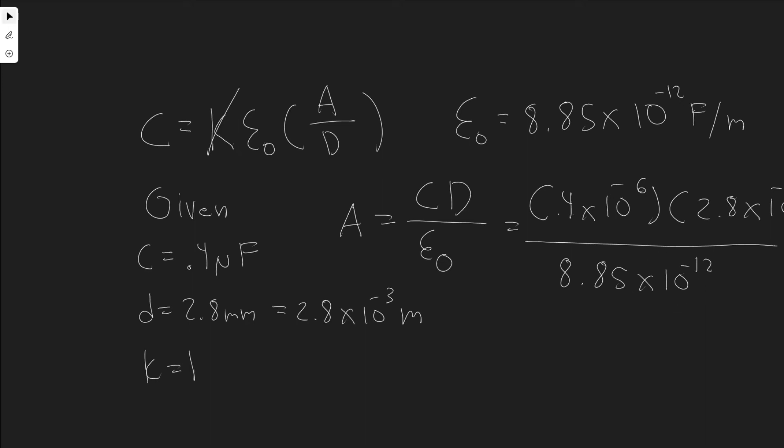And so all the units are going to cancel. And so what you're going to want to do now is just plug it in your calculator. So let's go ahead and do that. We're going to have 0.4 times 10 to the minus 6, multiplied by 2.8 times 10 to the minus 3, and then go ahead and divide by 8.85 times 10 to the minus 12.